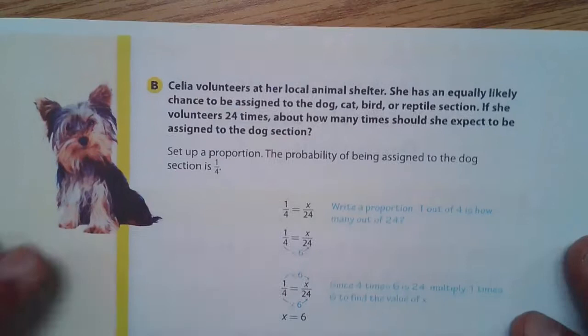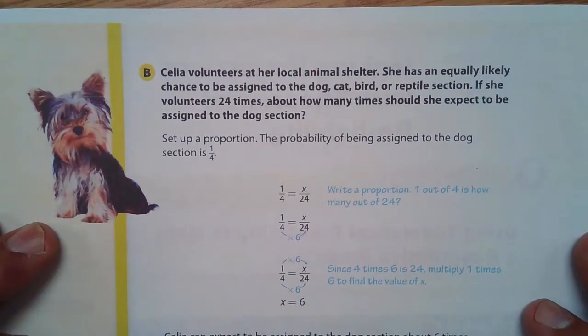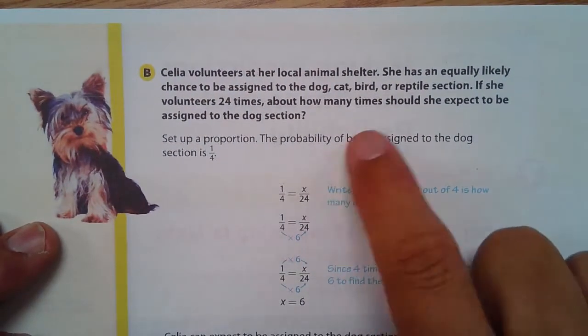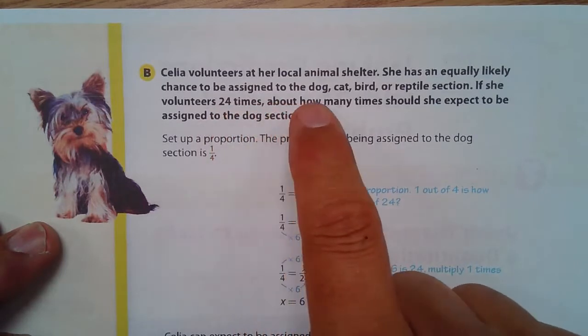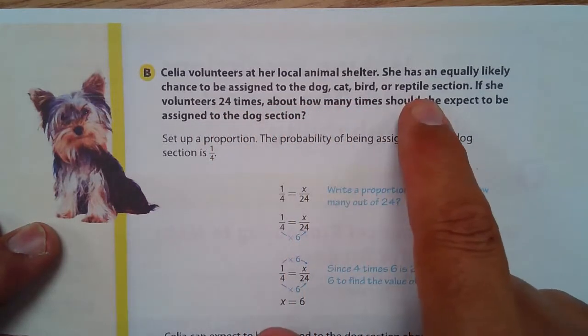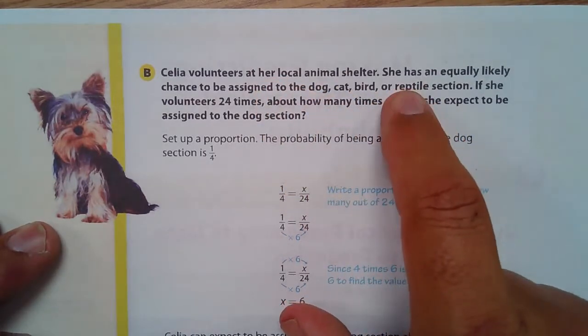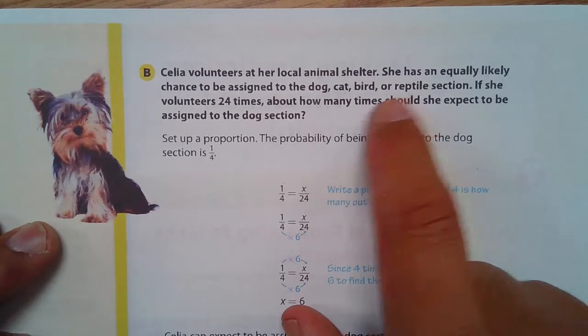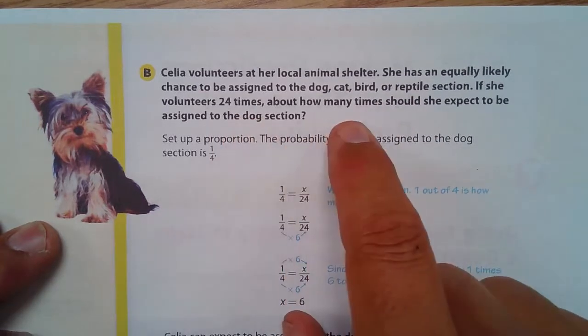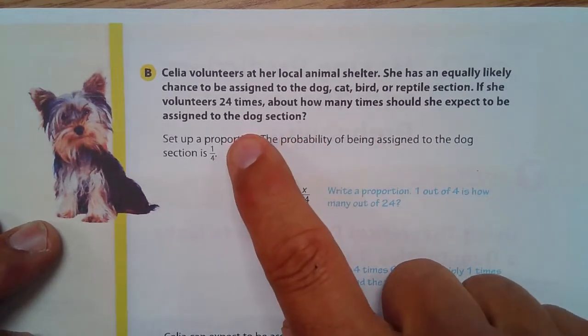Okay. Part B. Cecilia volunteers at her local animal shelter. She has an equally likely chance of being assigned to the dog, cat, bird, or reptile section. Remember it's important that you have an equally likely chance for this to work in order to do this type of probability. If she volunteers 24 times, about how many times should she expect to be assigned to the dog section?